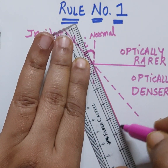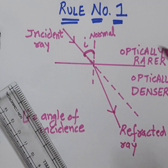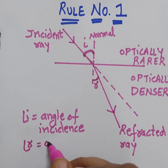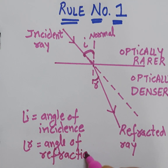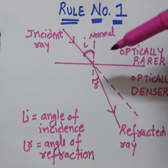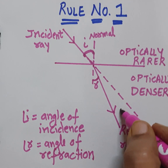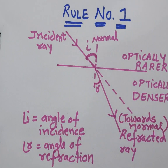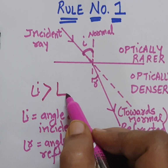Let us draw this ray. This ray is called the refracted ray, and the angle between the refracted ray and the normal is represented by small r and is known as the angle of refraction. Rule number one says that an incident ray passing from optically rarer medium to optically denser medium will bend towards the normal. As you can see in the picture, angle i is greater than angle r.